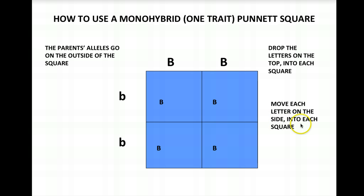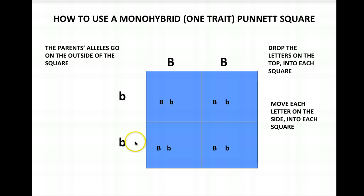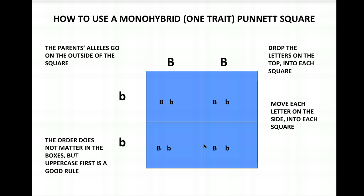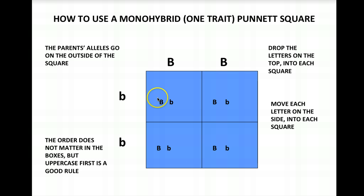Next, we move the letters on the side into each corresponding row's squares as well. Each allele from the side enters the squares in its corresponding row. One tip: the order you put alleles in the squares doesn't technically matter, but good practice is to always write the uppercase letter first. So even if you bring in lowercase letters first, rearrange to put the uppercase allele before the lowercase. This habit helps when Punnett squares become more complex.